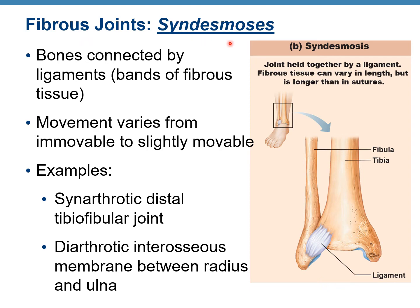Fibrous joints — syndesmosis. Bones are connected by ligaments, bands of fibrous tissue. Sutures had very short fibrous connections; syndesmosis just has longer fibers — that's pretty much the difference. You can see collagen fibers that are longer than sutures. Movement varies from immovable to slightly movable. An example is the distal tibiofibular joint, which is synarthrotic — non-movable — and the interosseous membrane between the radius and ulna, which is diarthrotic — a membrane between two bones.